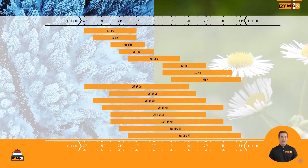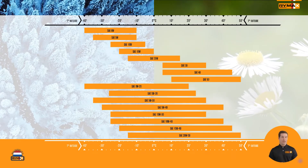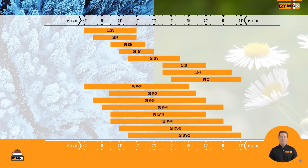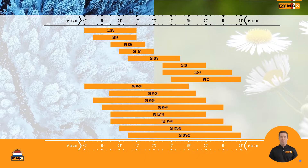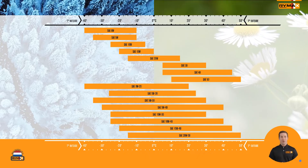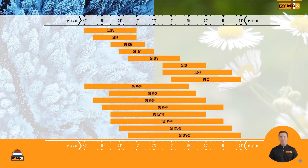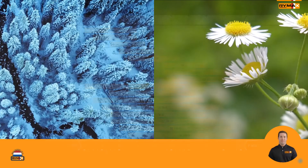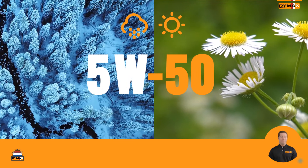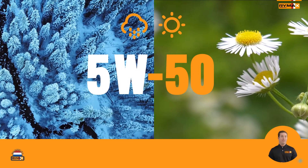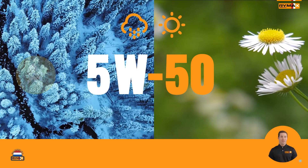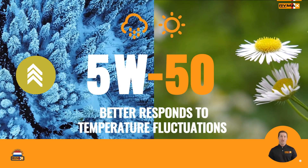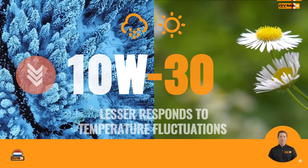The number on the right side of the W informs you about the summer property characteristics of this product, which means it indicates how well the product flows under hot circumstances when the engine is at operating temperature. The bigger the gap between the value before the W and behind the W, the less the oil loses performance under the influence of temperature.